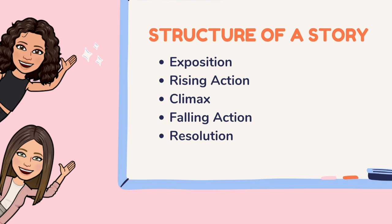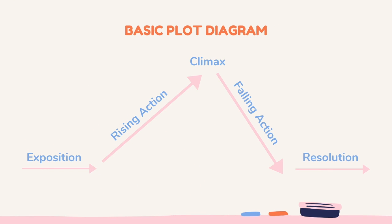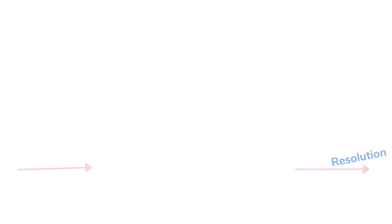A story structure consists of exposition, rising action, climax, falling action, and resolution. This is what the basic plot diagram looks like. As you can see, it kind of looks like a mountain. We will explain each part throughout the video.